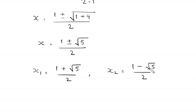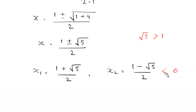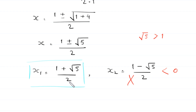Because the square root of 5 is greater than 1, the value (1 minus square root of 5) over 2 is less than 0, and a sum of two square roots cannot be less than 0. So this solution is rejected, and the only solution to this equation is x equals (1 plus root 5) over 2.